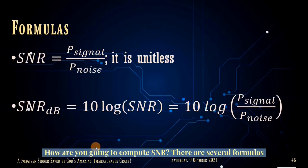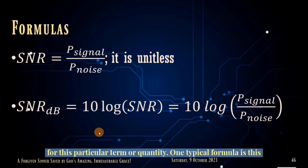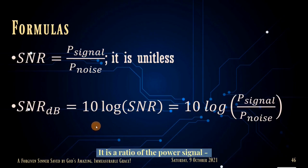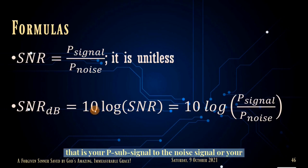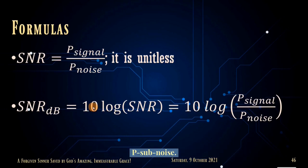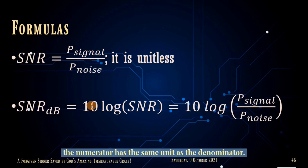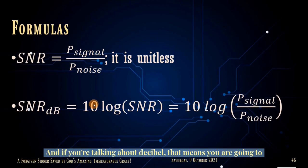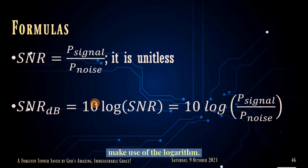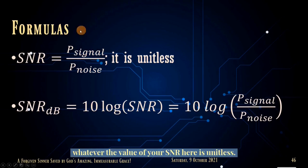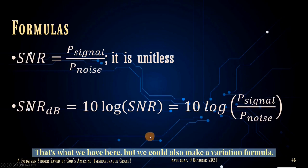Talking about formulas — how do you compute SNR? There are several formulas. One typical formula is the ratio of the power signal (P_signal) to the noise signal (P_noise). It is unitless because the numerator and denominator share the same unit. You can also compute SNR in decibels using the logarithm. SNR is higher when the signal is stronger and the noise is weaker. When SNR is greater than 1, that is a good thing; if less than 1, that is a problem.